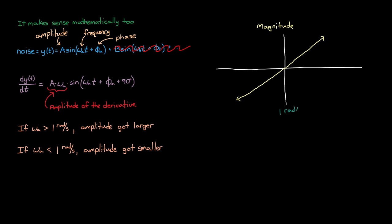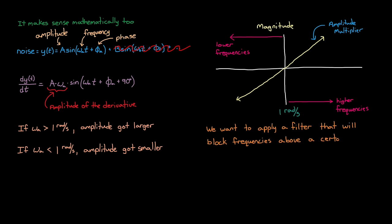And if we plot this magnitude change, it will look like this sloped yellow line, where higher frequencies create higher amplitude signals, and lower frequencies create lower amplitude signals.